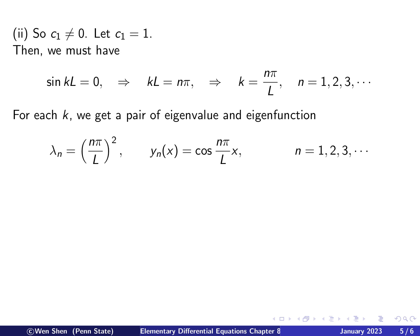So note that now we have different eigenfunctions. In the first example, we get sine, but this one, we get cosine.